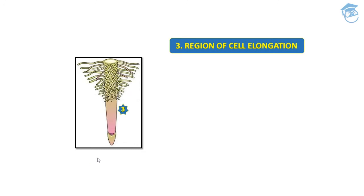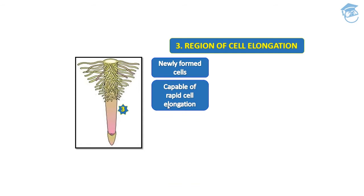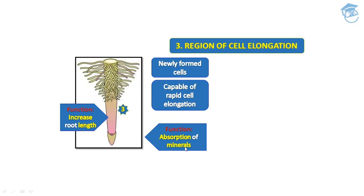The third region is the region of cell elongation. The newly formed cells are capable of rapid cell elongation — hence the name. The function of this region is to increase root length and help in longitudinal growth of roots. Another function is absorption of minerals, as multiple epidermal hairs above this region help in absorption of minerals, ions, and water from the soil.